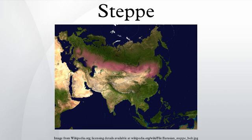Steppes are usually characterized by a semi-arid and continental climate. Extremes can be recorded in the summer of up to 40°C and in winter down to -40°C. Besides this huge difference between summer and winter, the differences between day and night are also very great. In the highlands of Mongolia, 30°C can be reached during the day with sub-zero readings at night.